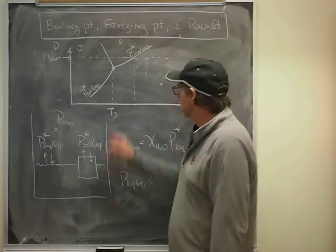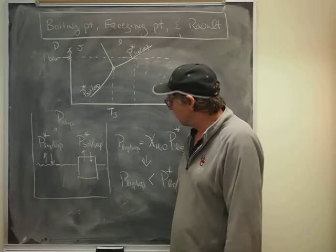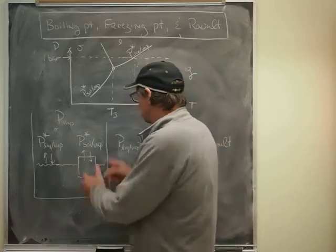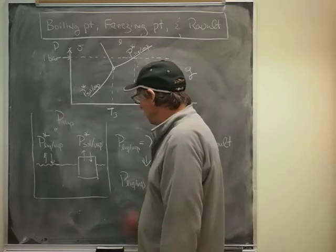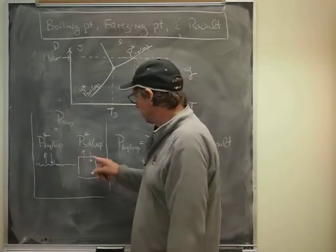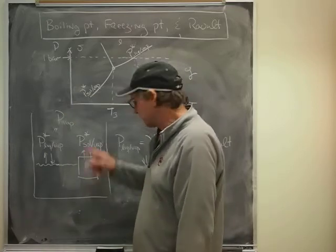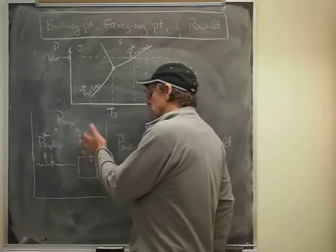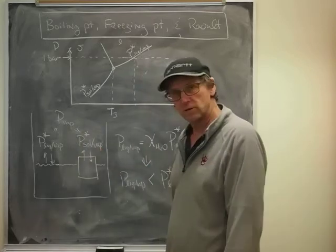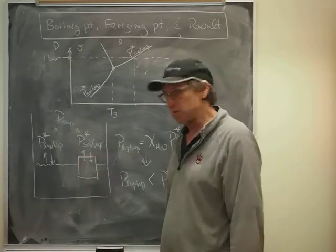How about along that part of the curve, the solid vapor curve? Well, it's the same kind of thing. We imagine that if I have ice in equilibrium with its vapor, then the rate at which molecules are leaving the ice and going into the ice is the same. So what we would say is that P star of the solid vapor curve equals the ambient vapor pressure.